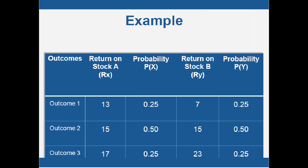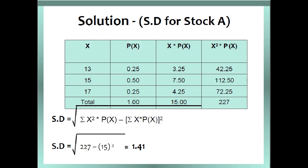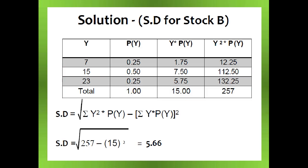Let's see an example. There are two stocks: Stock A with returns of 13, 15, and 17 and probabilities of 0.25, 0.50, and 0.25 respectively; Stock B with returns of 7, 15, and 23 with the same probabilities. The standard deviation for Stock A is 1.41 and for Stock B is 5.66. Since Stock B's standard deviation is greater, Stock B is more risky than Stock A.